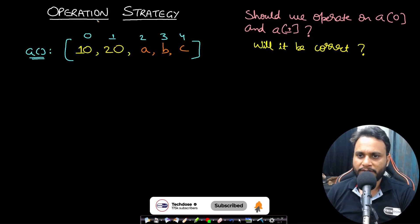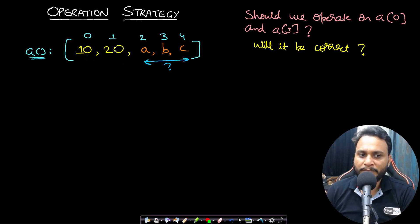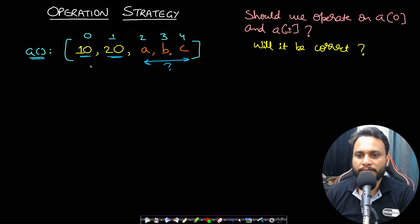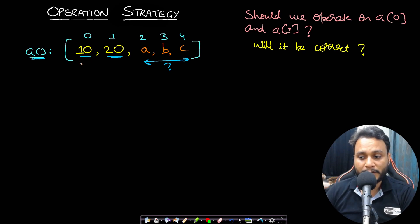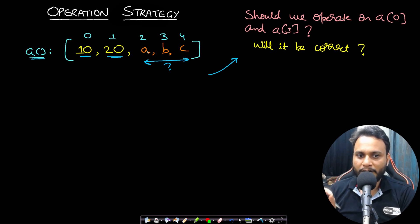Now let's think about the operation strategy. Say our array is [10, 20, a, b, c]. It will always be optimal to reduce the left-hand elements as much as possible — a lower starting point increases the chance of making the entire array strictly increasing. For element 10, the maximum prime less than 10 is 7, so subtracting 7 gives 3. This greedy choice is always optimal.